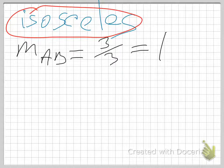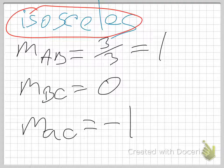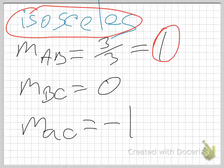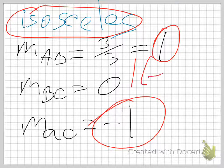The next part is to determine if it is a right triangle. For that, measure the slopes. The slope of AB equals 3/3, which is 1. The slope of BC is 0. The slope of AC is −1. The slope of AB is 1 and the slope of AC is −1 — those are opposite reciprocals of each other.